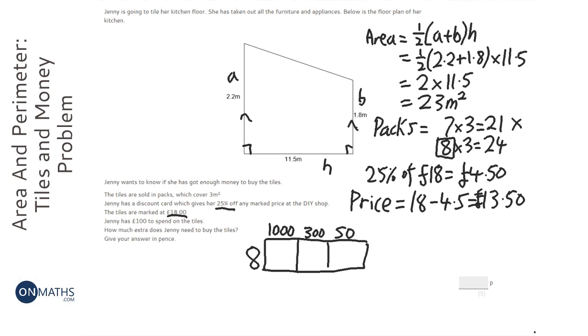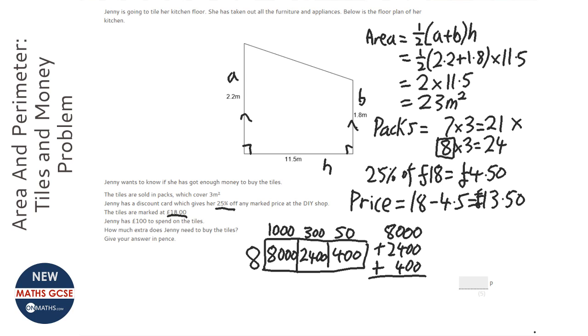So that's going to be 8,000 there. That's going to be 2,400. That's going to be 4,000 with a 0, so it's going to be 8,000 plus 2,400 plus 400. So the 4 plus the 4 is 8, and the 8 plus the 2 is 10. So that's in pence, so that's going to be £108.